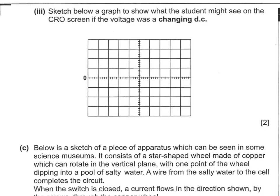Part 3: sketch what a student might see on the CRO for a changing DC signal. DC means it stays on one side — all positive or all negative — but 'changing' means there's some variation. So the sketch would show a waveform that stays positive but oscillates in amplitude. This is typical of DC power supplies, which are derived from AC and have a ripple — the average value defines the supply voltage, but real DC isn't flat like a battery output.